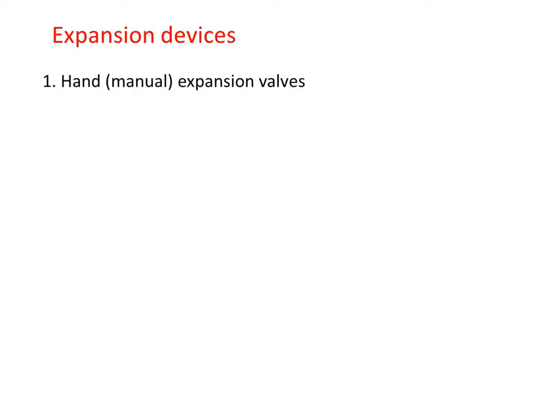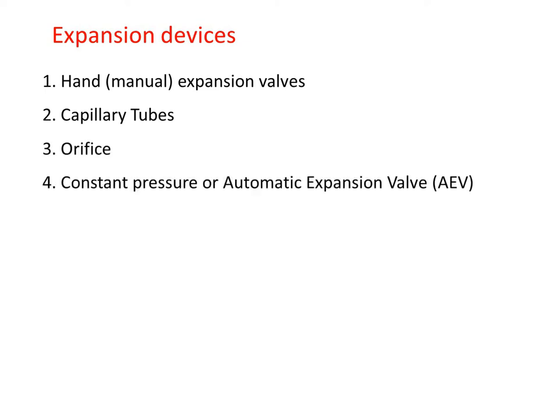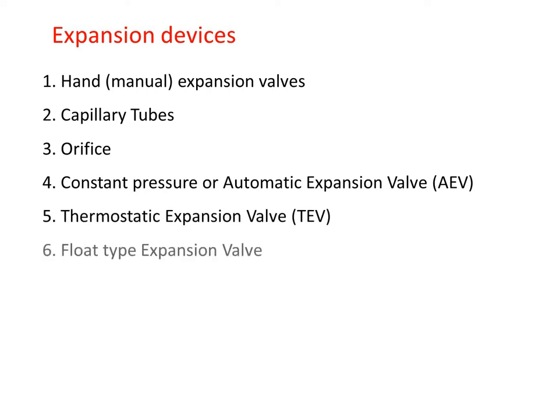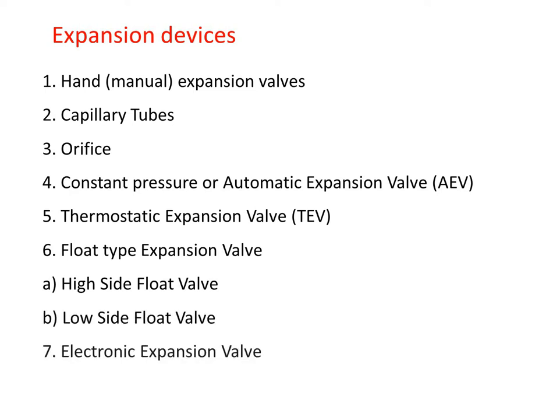The various expansion devices used in refrigeration and air conditioning systems are hand or manual expansion valves, capillary tubes, orifice, constant pressure or automatic expansion valve (AEV), thermostatic expansion valve (TEV), float type expansion valve — further classified as high side float valve and low side float valve — electronic expansion valve, and fixed opening type or variable opening type of expansion devices.